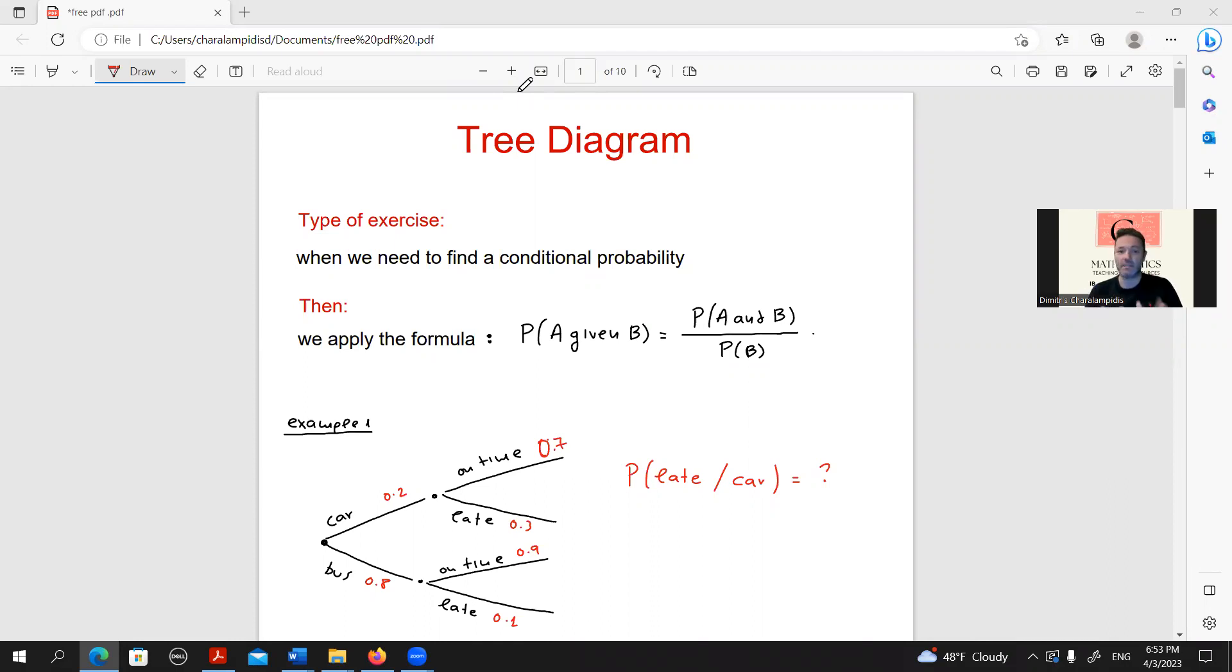In this specific type, it's the case in which we are given a tree diagram and we are asked to find a conditional probability. And here, keep that, bear that in mind, that the key word will be the word given.